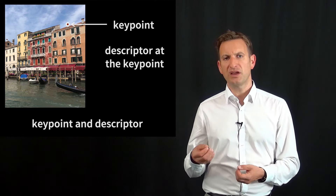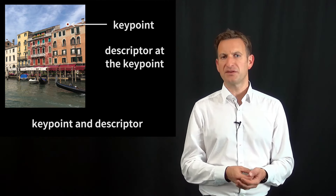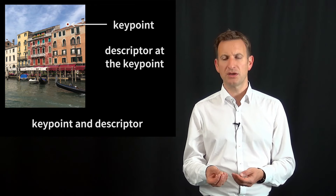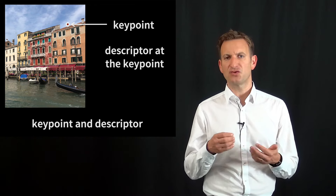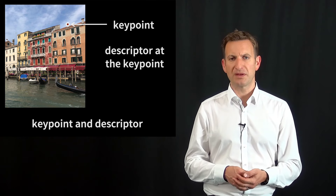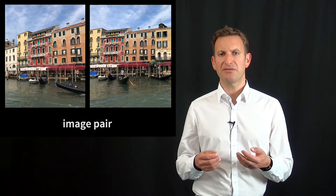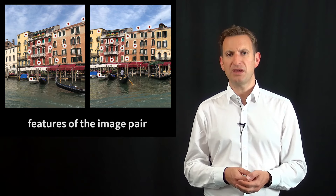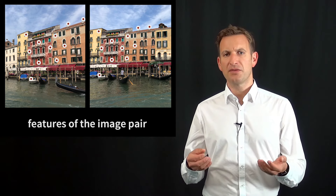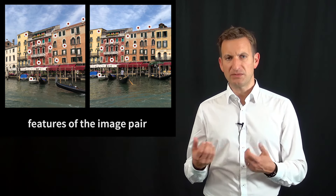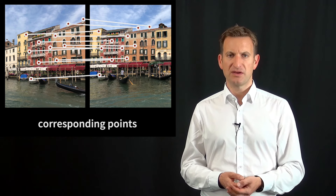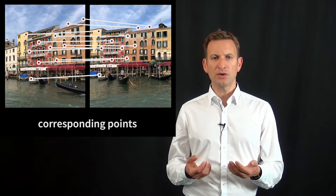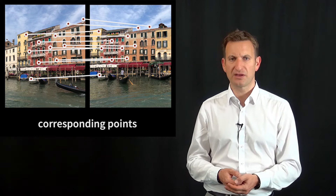It's important to distinguish the key point from the descriptor vector. The key point is a point in the image, and the descriptor is a vector which describes the local surroundings around that point. If we have multiple images where we find the same key point via feature descriptors, we can make data associations between those images, which is an important task for geometric reconstruction.